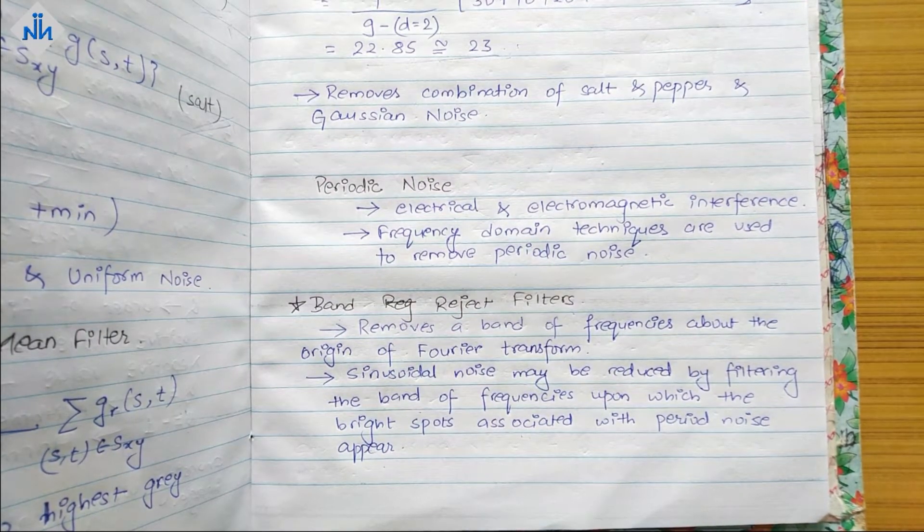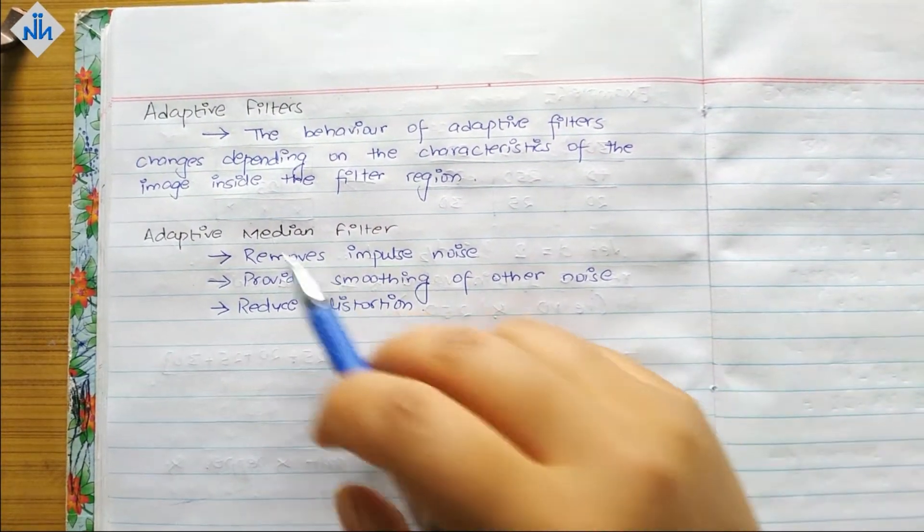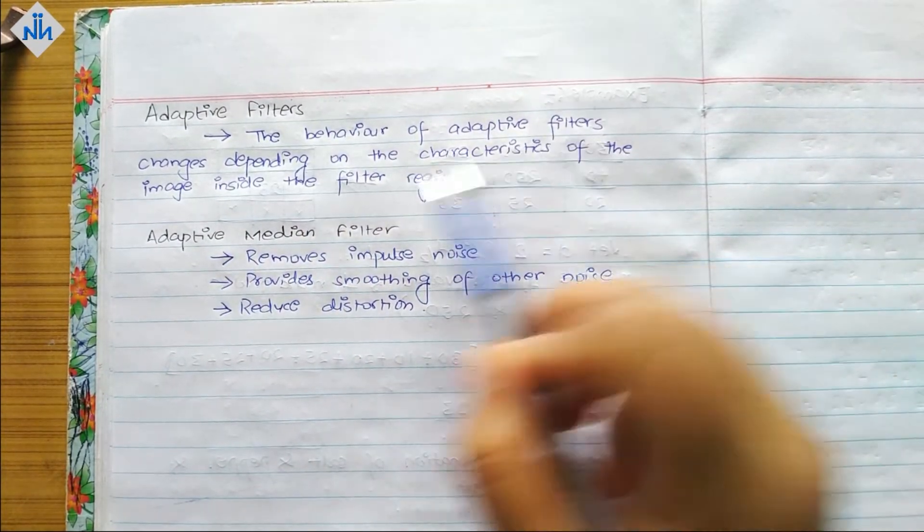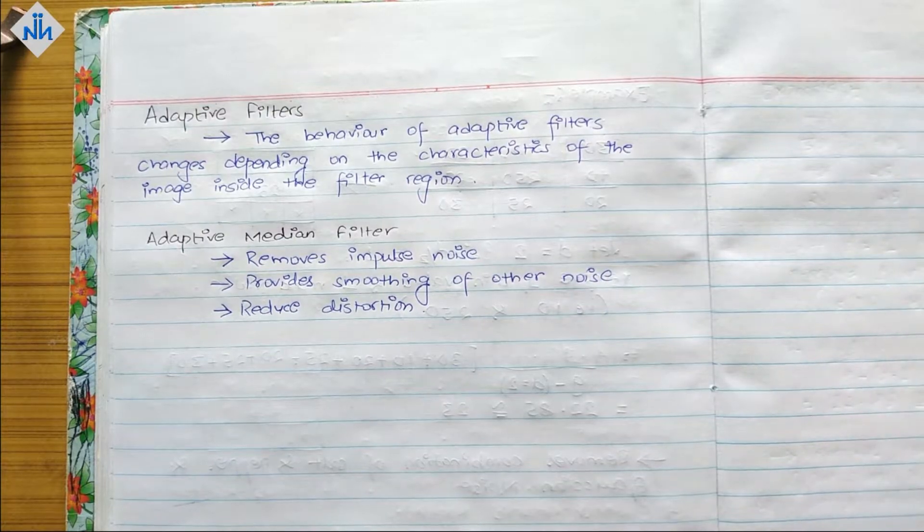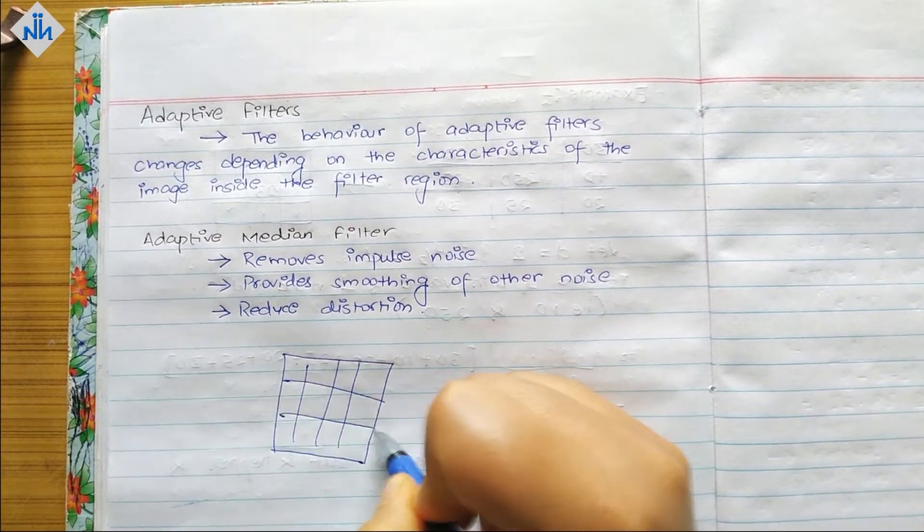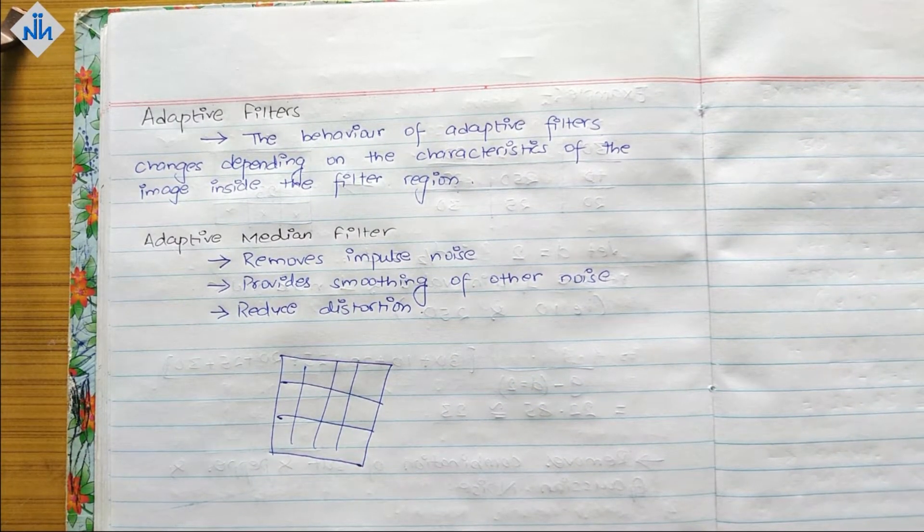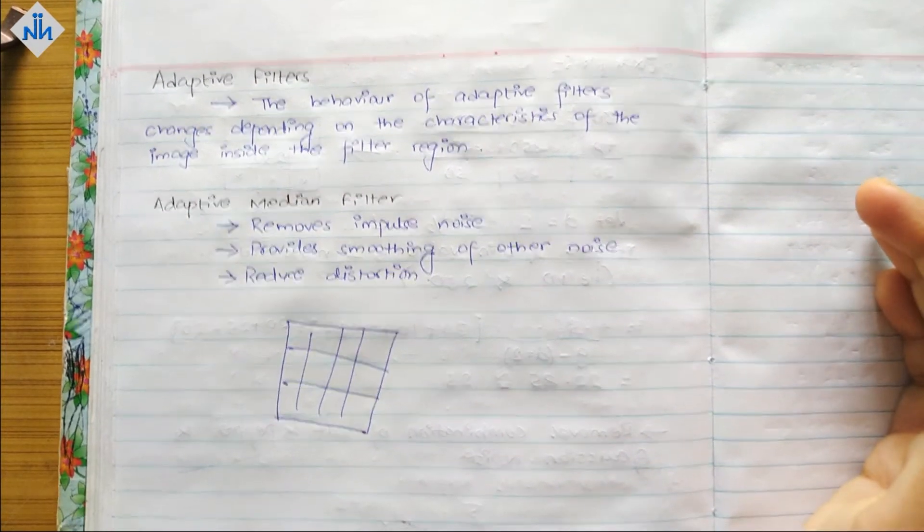We have another type of filter as well, which is known as adaptive filters. The behavior of adaptive filters changes depending on the characteristics of the image inside the filter region. Till now what we were talking about, we were taking the entire image and trying to filter it all. We were not really considering which part needs filtering and which does not, but adaptive filter takes care of that.